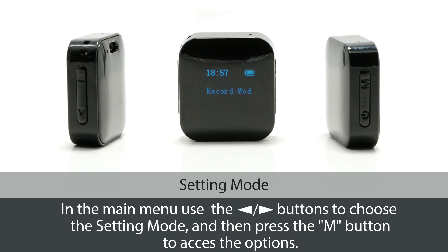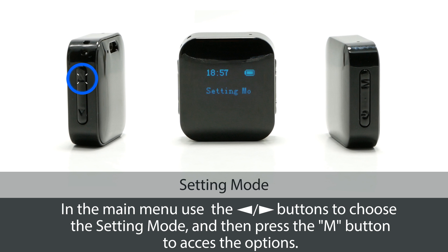Setting Mode. In the main menu, use the arrow buttons to choose the setting mode, and then press the M button to access the options.